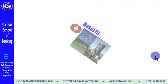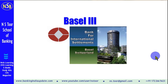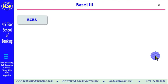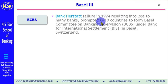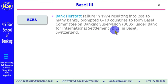Hello friends, in this lecture we shall discuss Basel III. In the year 1974, there was a failure of Bank Herstatt, and this resulted in losses to many banks. That prompted a group of 10 countries called G-10 countries to form the Basel Committee on Banking Supervision, in short BCBS. This was under the Bank for International Settlements, located in Basel, Switzerland.